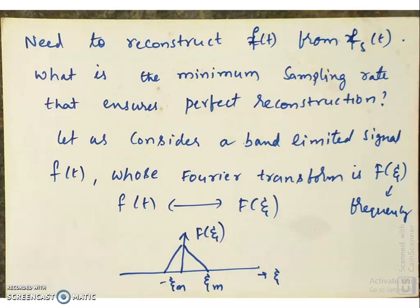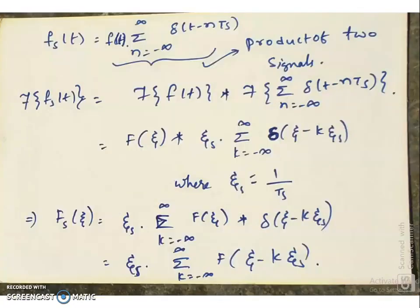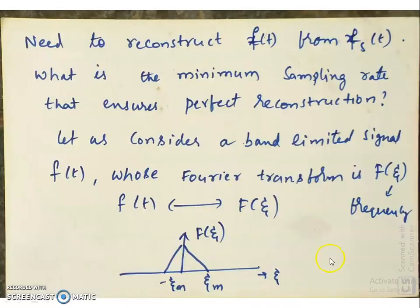This is because of the Heisenberg uncertainty principle. Let us consider F of t and Fs of t and see what the spectrum of Fs of t is in terms of the spectrum of F of t. We are trying to compute the spectrum of Fs of t. We have assumed the spectrum of F of t is F of ζ. You may wonder why I have drawn a triangular spectrum — the shape of the spectrum can be anything, it can be arbitrary. I drew a triangular shape simply because it is easy to draw.